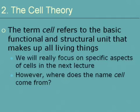Where does the name 'cell' come from? Robert Hooke was the first person to identify cells. He sliced up cork very thinly, looked at it under the microscope he made, and noticed that all the cork looked like it was made of rectangular or square boxes. He said they looked like the small barren rooms — the cells — of a monastery. That's where the name came from.